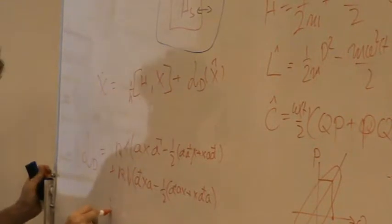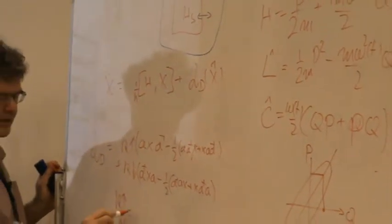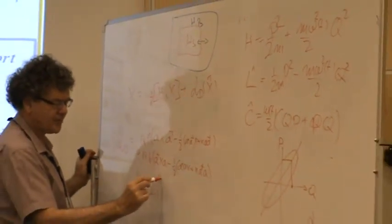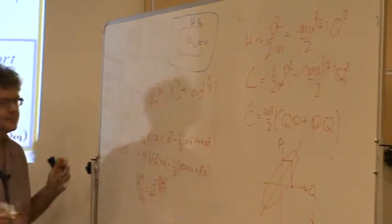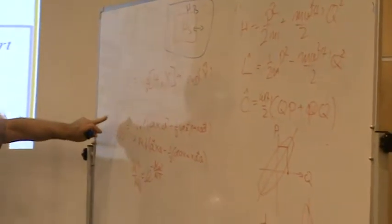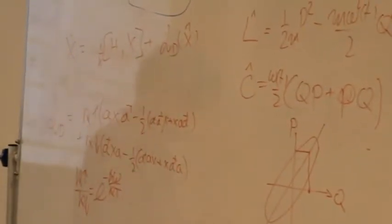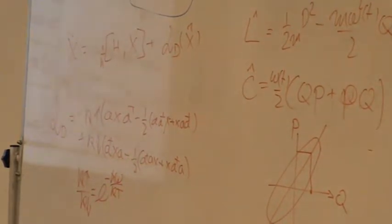And we know to get thermalization, K up divided by K down is e to the power of h bar omega divided by KT. So this will be our master equation, our quantum master equation, or Lindblad form that we're going to use for the harmonic oscillator.